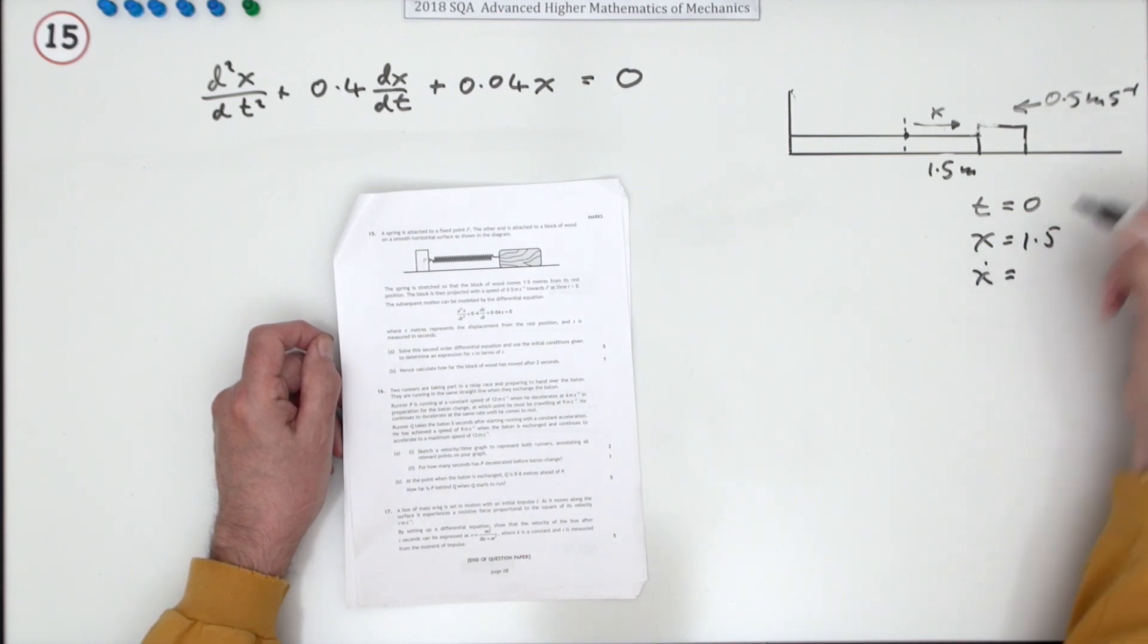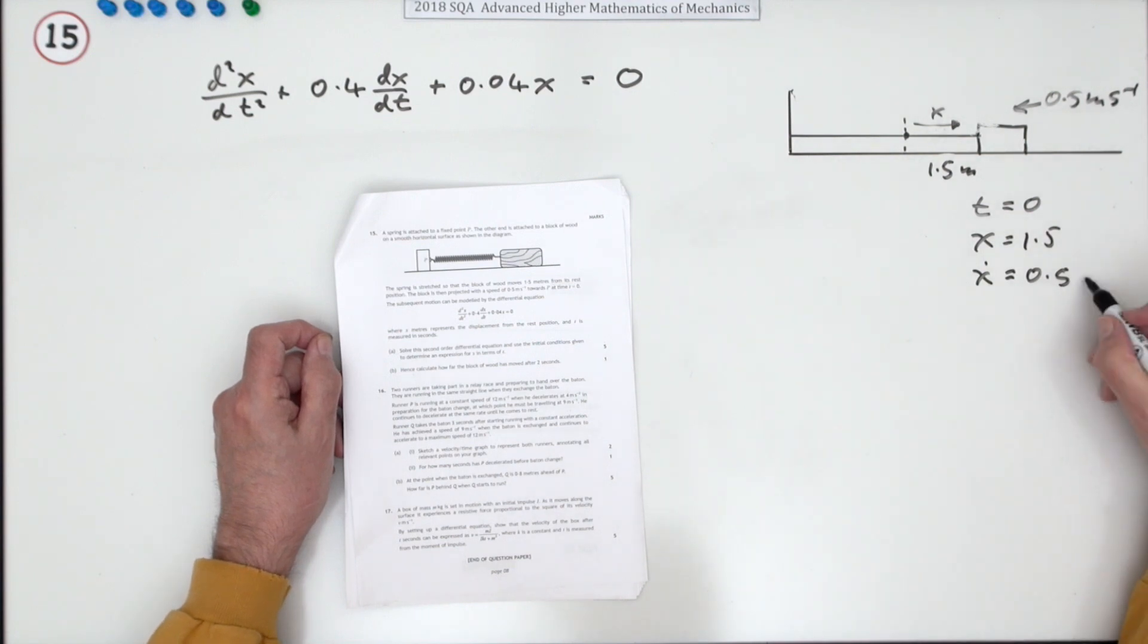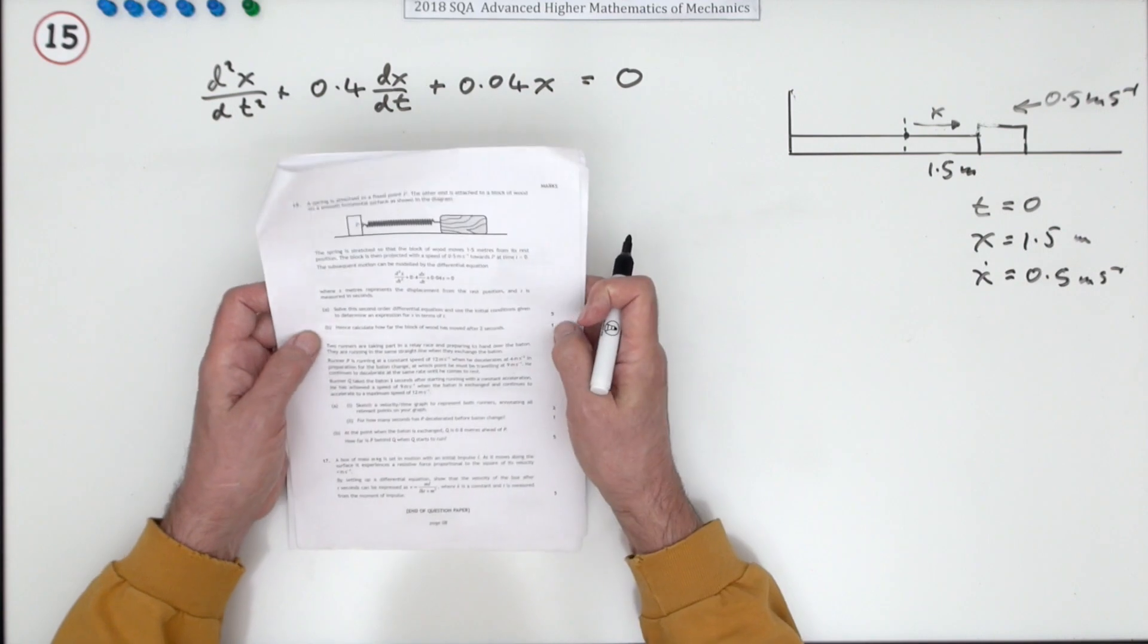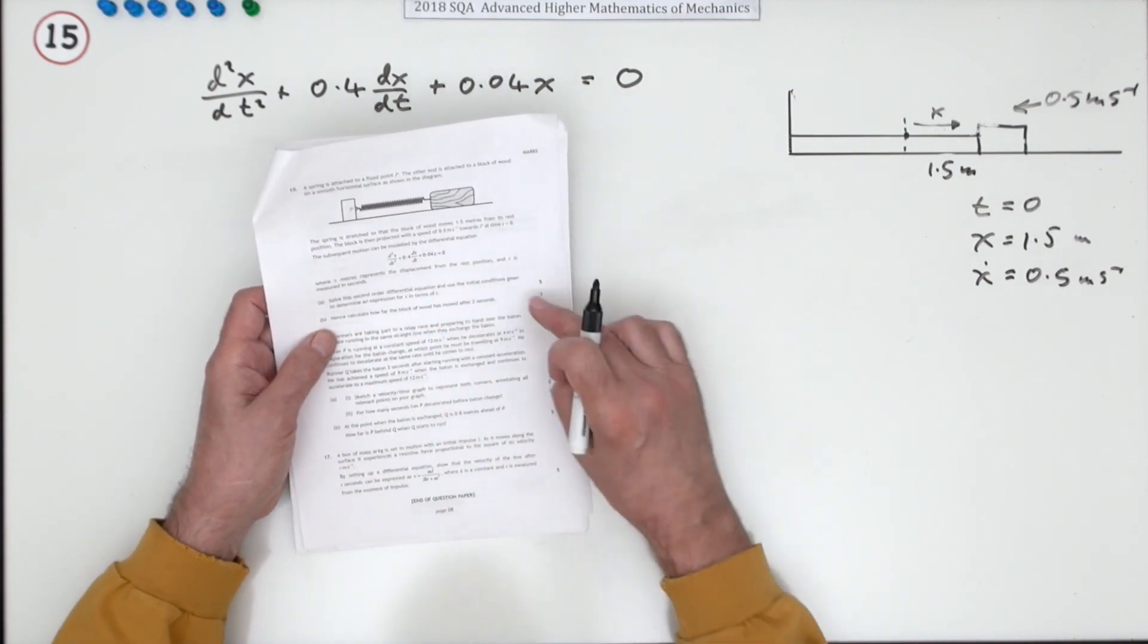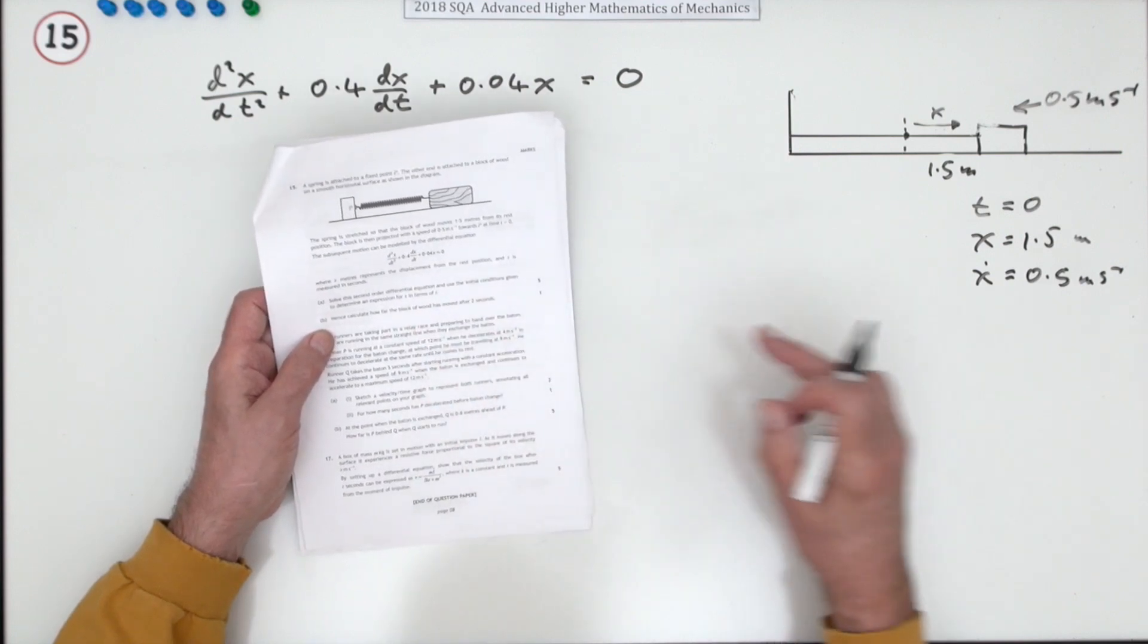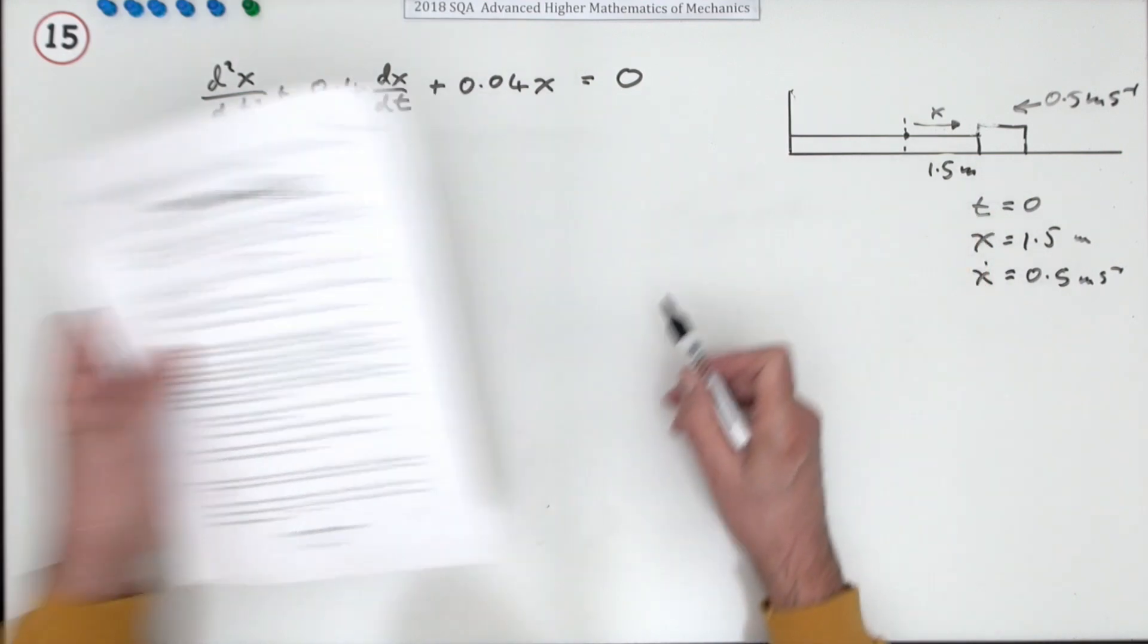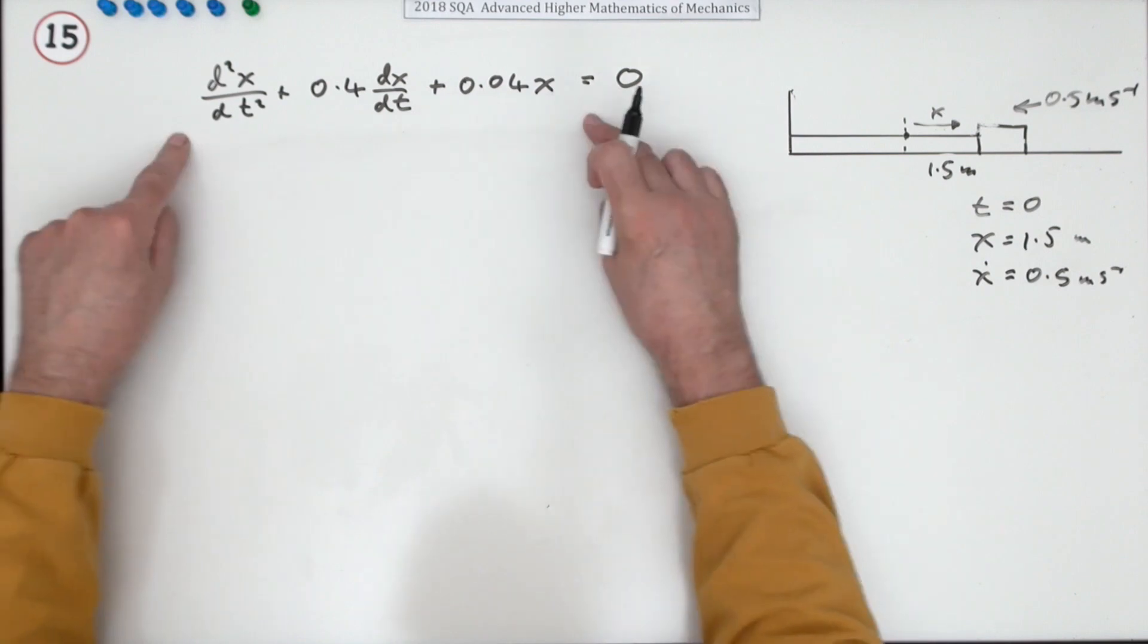And the speed, which is x dot, was negative 0.5 because you set it off on its way. I'll put the units in, but you'll be putting them into the equation. So solve that to determine an expression for x in terms of t, in other words an expression that will give the displacement at any time.